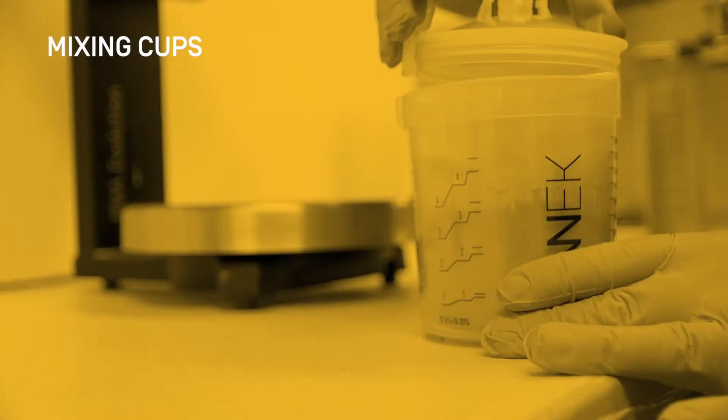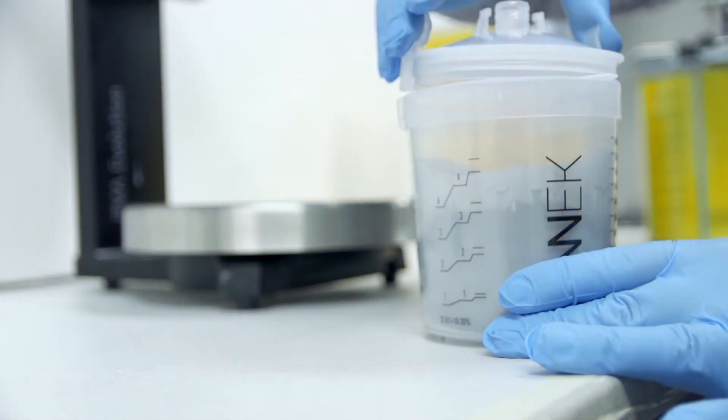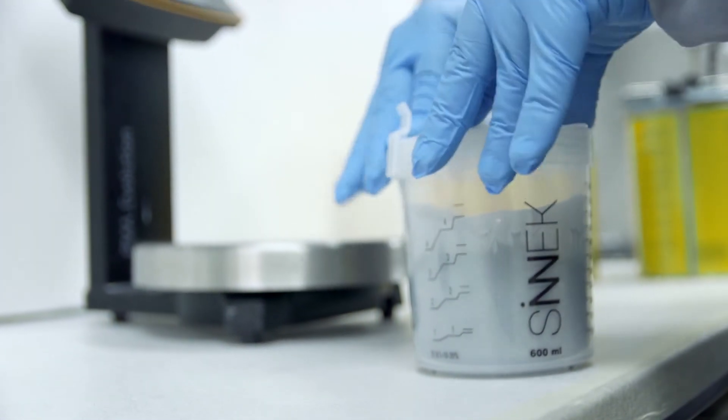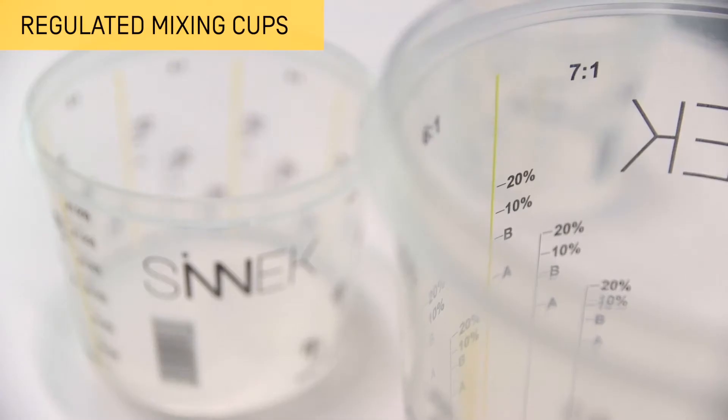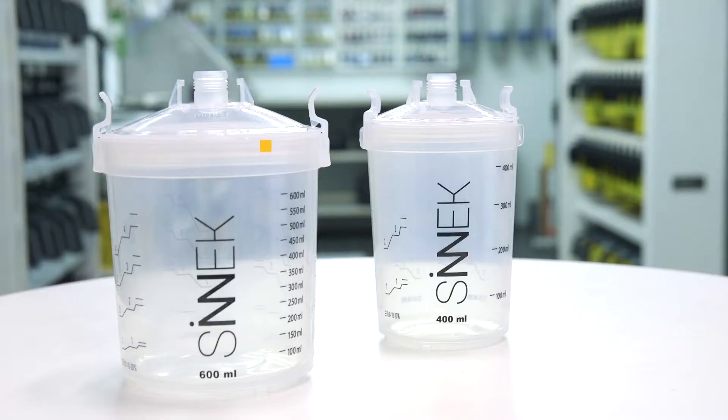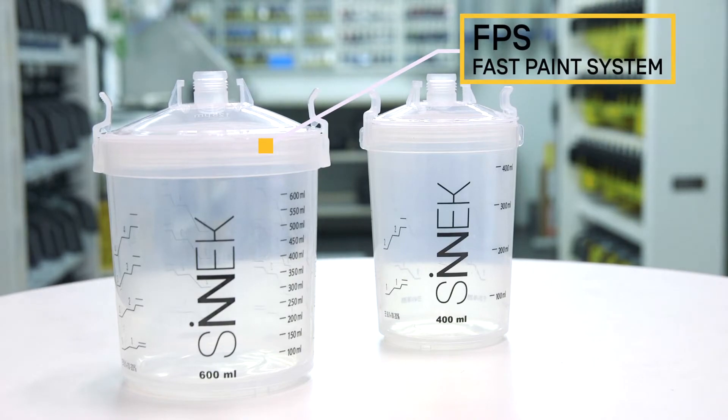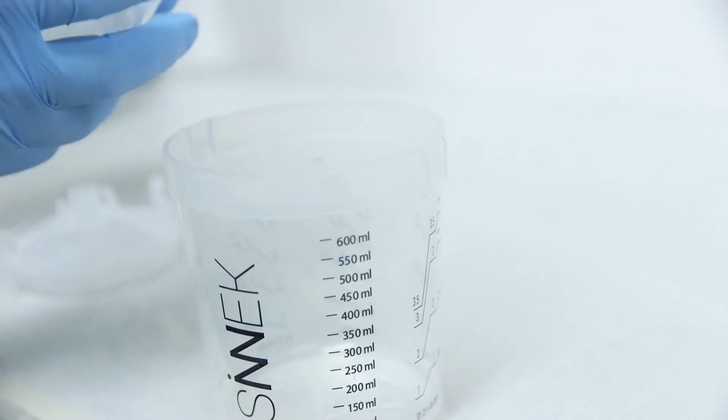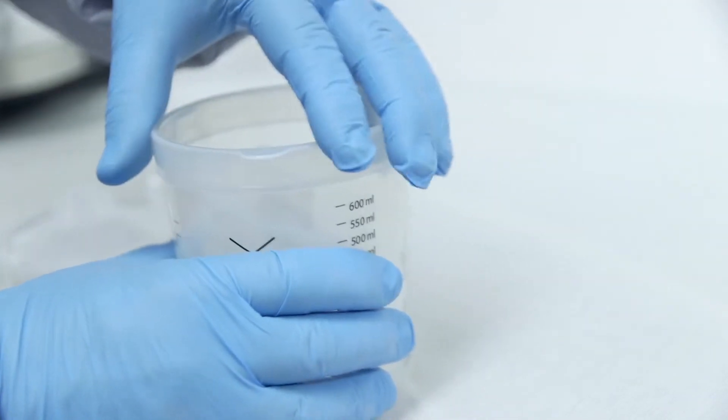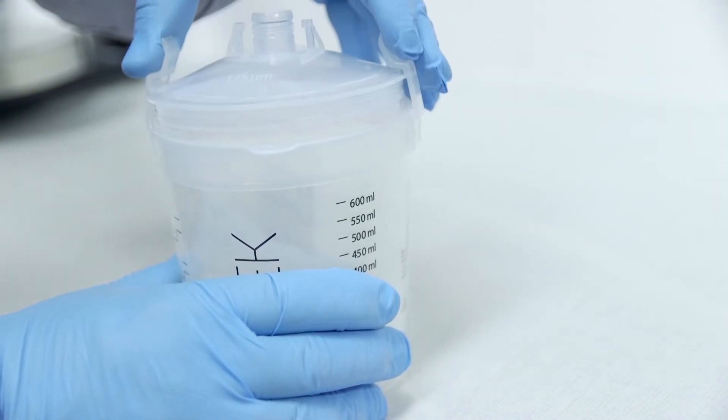The mixing cup is another method that allows us to easily calculate the proportions to mix, following the rules printed on the cup for each component. The system includes a measuring cup and a flexible single-use cup, which reduces the preparation time of the paint and removes the cleaning process of the cup.